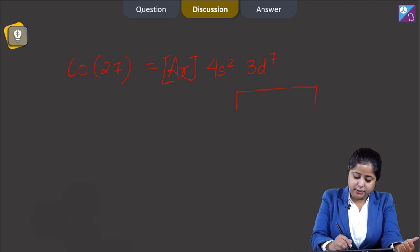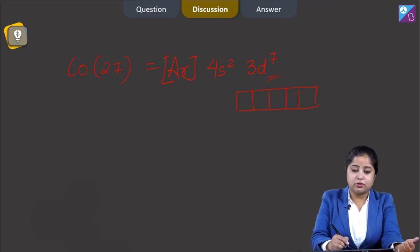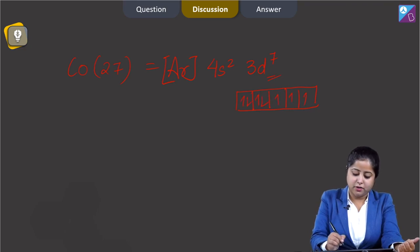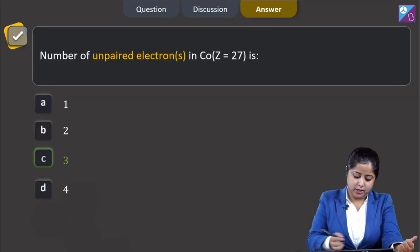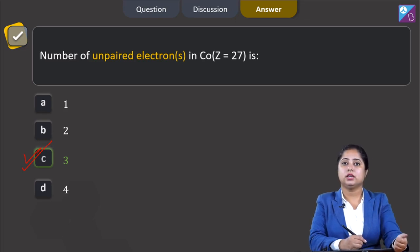Let us draw the orbital diagram of 3d. Since there are 7 electrons in the 3d orbital, filling them gives: 1, 2, 3, 4, 5, 6, 7. It is very clear that cobalt contains 3 unpaired electrons, so the correct answer is option C.